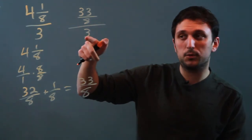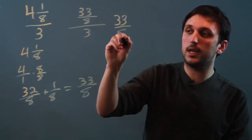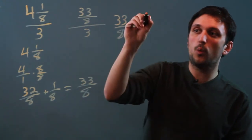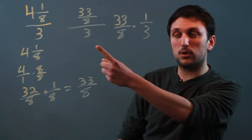So as I said, we'll use the reciprocal method, which is to flip. So we say 33 over 8 times 1 over 3. One third is the reciprocal of 3.